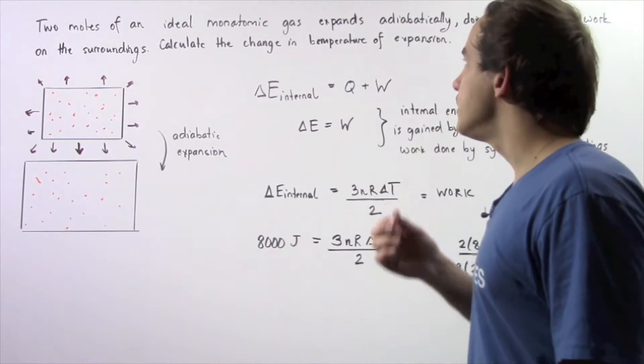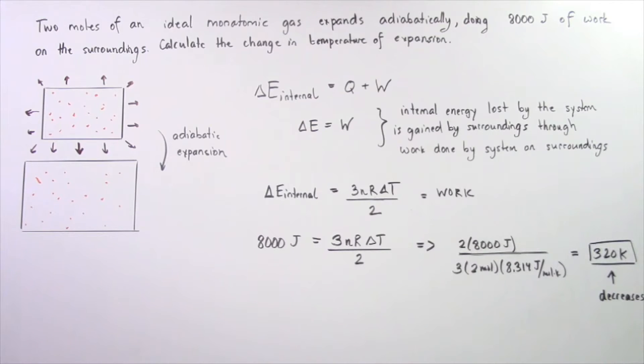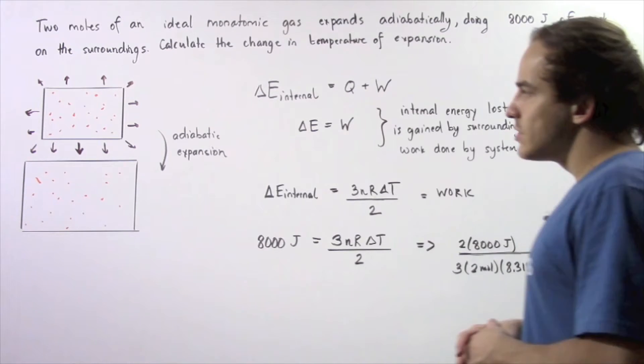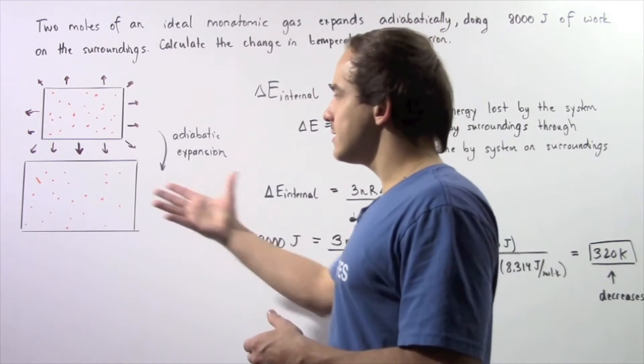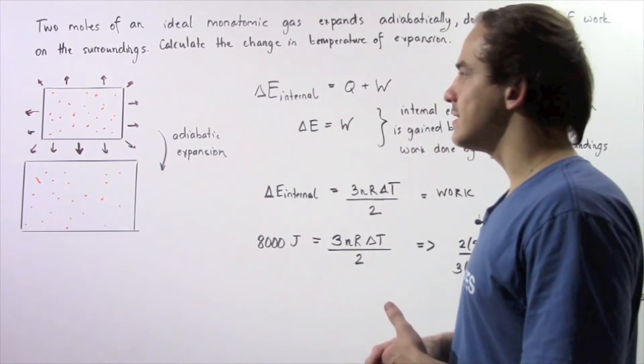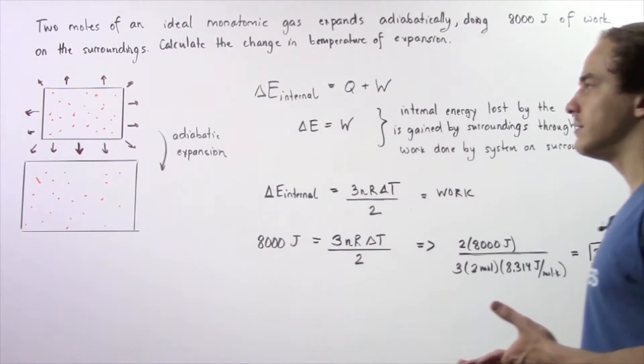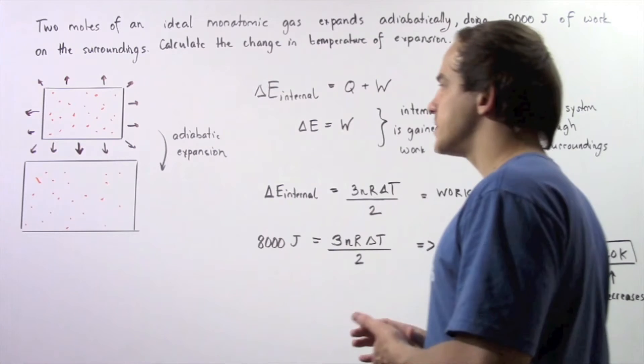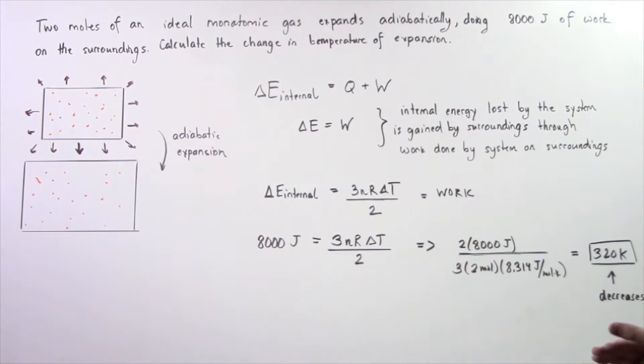Calculate the change in temperature of our adiabatic expansion. Our volume increases and our ideal gas system does work on the surroundings as shown, and our expansion is adiabatic.